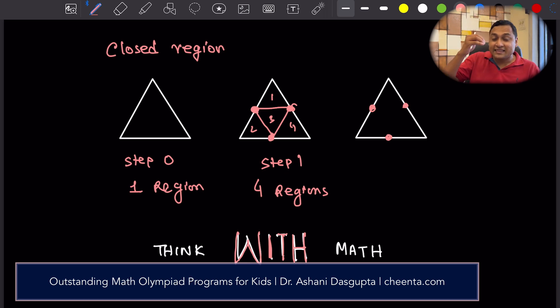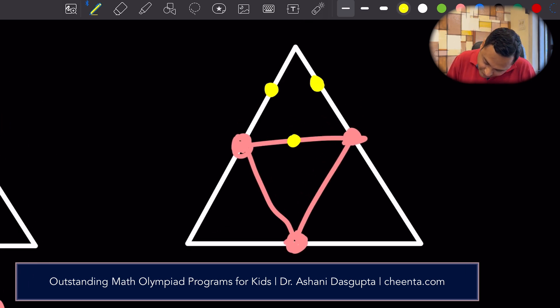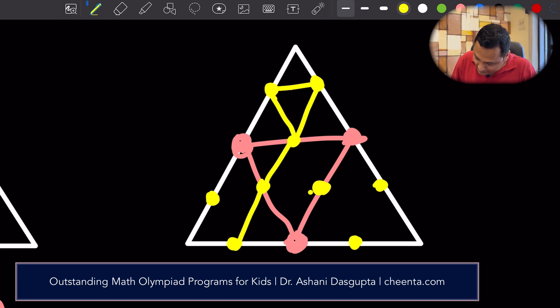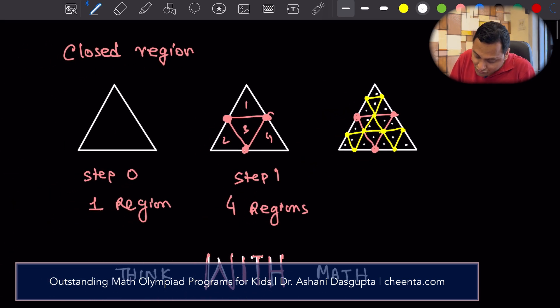That's very good. Now let's take the next step of the process. I'll join again the midpoints. But now, I will also draw the midpoints of these smaller triangles. Like this. And now I will connect them with straight lines. Just like I did earlier. Like this. And now the question is again the same. How many regions are formed? Closed regions. So what we can do is we can actually count. 1, 2, 3, 4, 5, 6, 7, 8, 9, 10, 11, 12, 13, 14, 15, 16. So there are total 16 regions. Step 2. There are 16 regions.